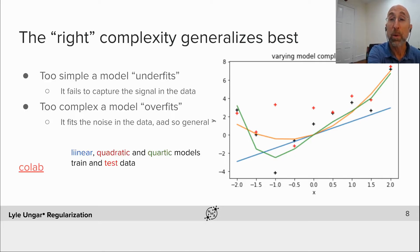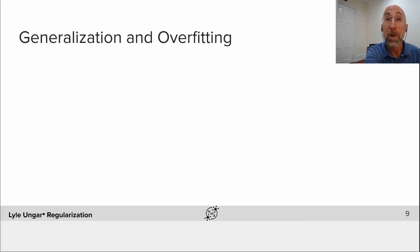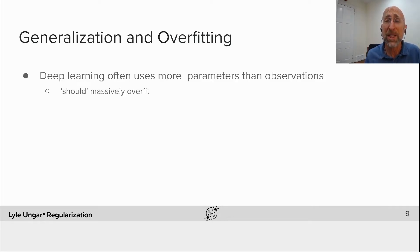So linear, quadratic, quartic. In our case, we'll look at hundreds of thousands or millions of weights, but the same idea holds. So what's the idea? In neural nets, we're going to tend to use incredibly complex models, often more parameters, more adjustable weights than observations. If you do this, you should be able to massively overfit.